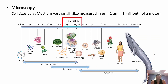Microscopy allows us to look at very small cells we can't see with the naked eye. The human eye can see down to about a human egg. A light microscope, most commonly found in labs, can resolve most bacteria down to chloroplasts. To see organelles, viruses, or proteins, you need an electron microscope, which is usually expensive and typically requires supervision to use.